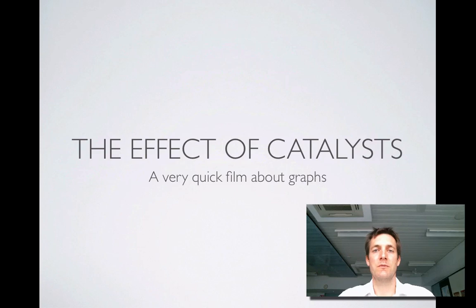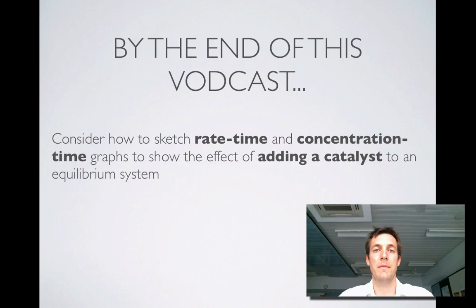Hello and welcome to this film which is about catalysts and their effect on equilibrium systems. It's the last in the series of films about the factors that affect equilibrium, and this one is about graphs. We're looking at this from the perspective of rate-time and concentration-time graphs and seeing how they might change when we add a catalyst to a system.